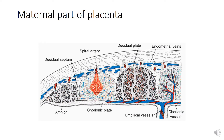The maternal part of the placenta is derived from the decidua basalis. The deep part of the decidua basalis lying against the chorionic frondosum becomes incorporated into the placenta as the decidual plate (basal plate). The basal plate is composed of a mixture of decidual and trophoblastic tissues, and deposits of an amorphous material called fibrinoid are also present. The spiral uterine arteries run obliquely through the basal plate to open into the intervillous space through holes and gaps in the cytotrophoblastic shell.